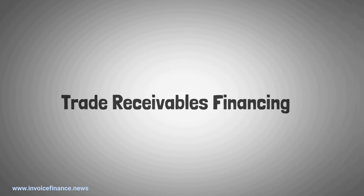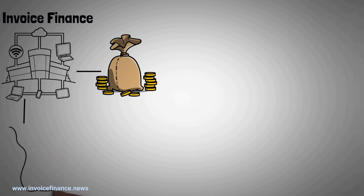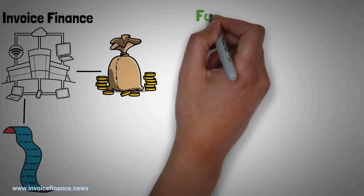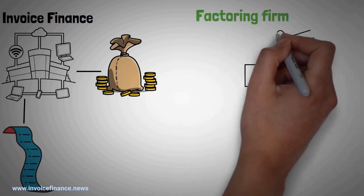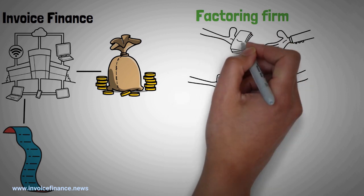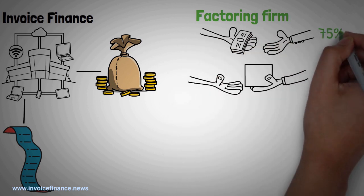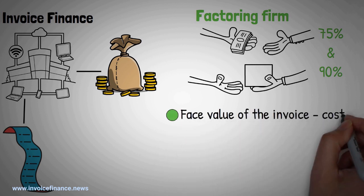Trade receivables financing, also known as invoice finance, is when a company uses trade receivables to raise money. Essentially, a company has unpaid invoices that they can use to raise cash. One common way to do this is to approach a factoring firm that will buy the outstanding invoices for a discount in return for an instant cash payment, normally between 75% and 90% of the face value of the invoice minus costs.